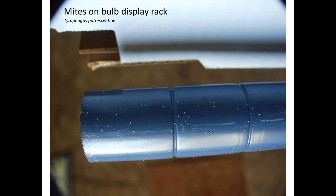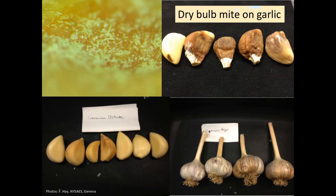Tyrophagus putrescentiae is more of a mite that feeds on decaying material than live plants, though in high numbers I've actually seen it cause a small amount of plant damage. Here's dry bulb mite — you can see very tiny elongated mites in the yellow image, and a 32x close-up of what those mites look like. Below that you'll see garlic cloves that have been damaged and bronzed as a result. After storage, garlic cloves on the lower right show depressions where they've obviously collapsed — that's also due to dry bulb mite.